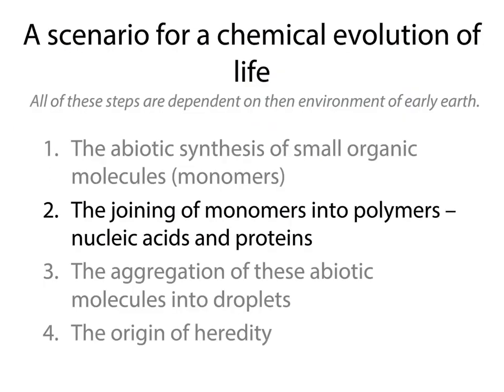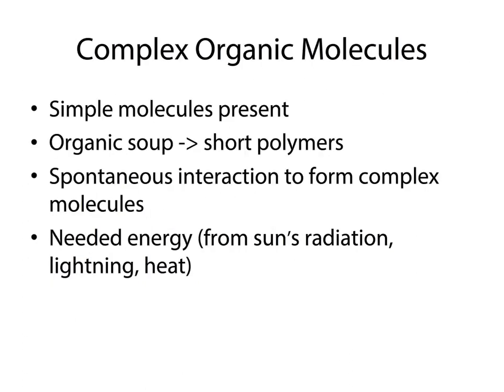Now let's go to step two. You've got these monomers — we know they can be made in a lab. Now we have to put them together into polymers: things like proteins, nucleic acids, and all sorts of other good stuff. Our simple molecules existed in an organic soup, and you've got to put them together to form short polymers. This requires a spontaneous interaction, which means you need energy. Lightning could give that, heat from the bottom of the oceans could give that, the sun's radiation could give that — any of those could provide the energy needed to put together your polymers.